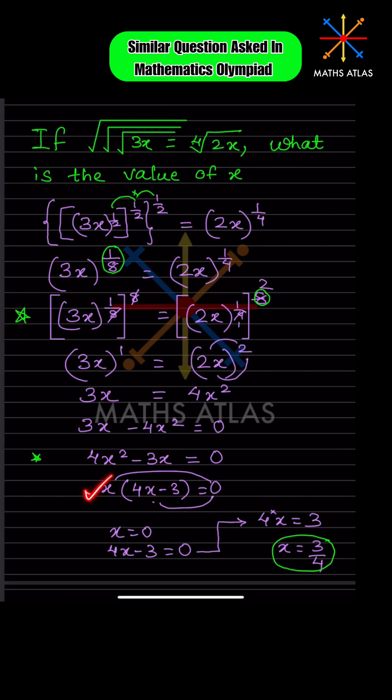Take the common, so x should be zero or this will be zero. X is zero. Let us solve this. After solving this, x is 3/4, so two values of x.